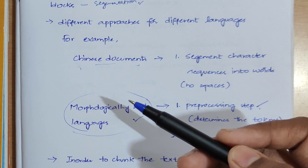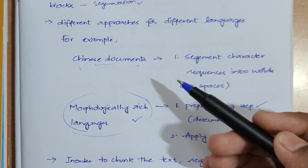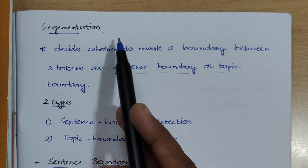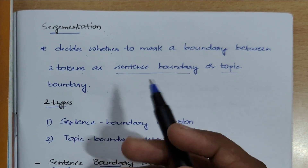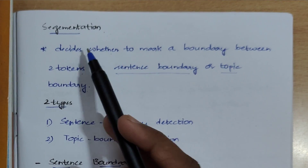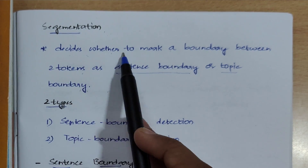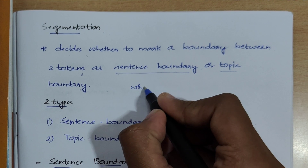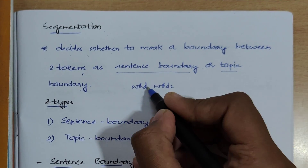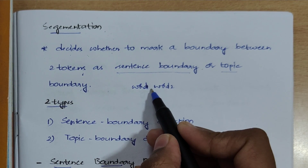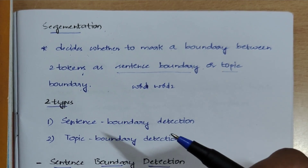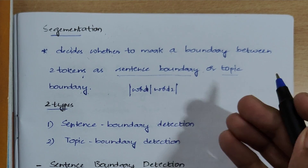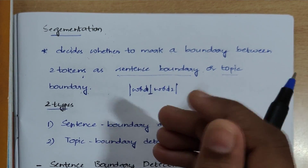Now we will see what segmentation is and the types of segmentation. Segmentation is dividing the given text into some chunks. The main aim of segmentation is that it decides whether to mark a boundary between two tokens — a sentence boundary or a topic boundary. We humans can understand sentence or topic boundaries, but a machine cannot.